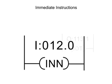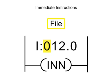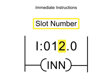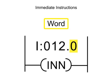Immediate instructions are addressed with the file, rack, and slot numbers separated by a decimal, with the word to be updated.